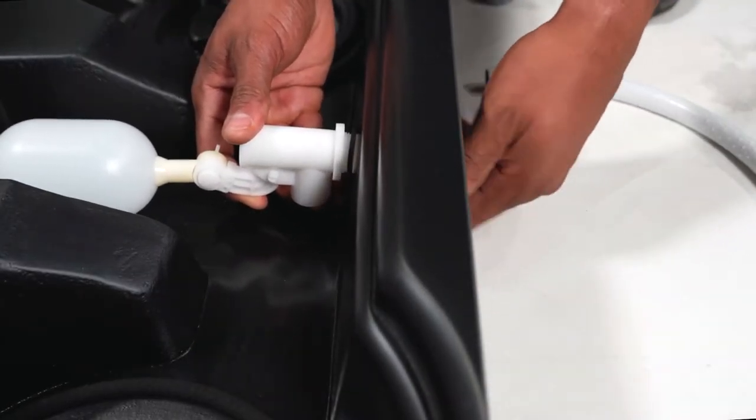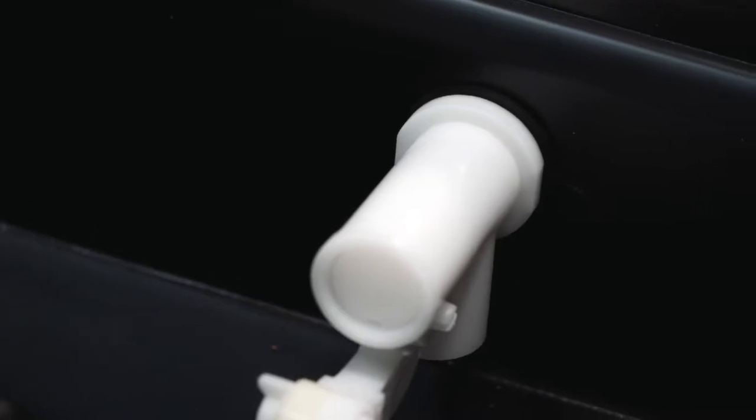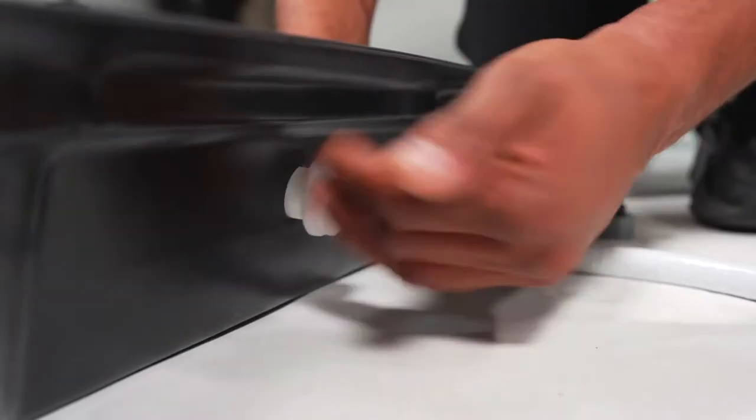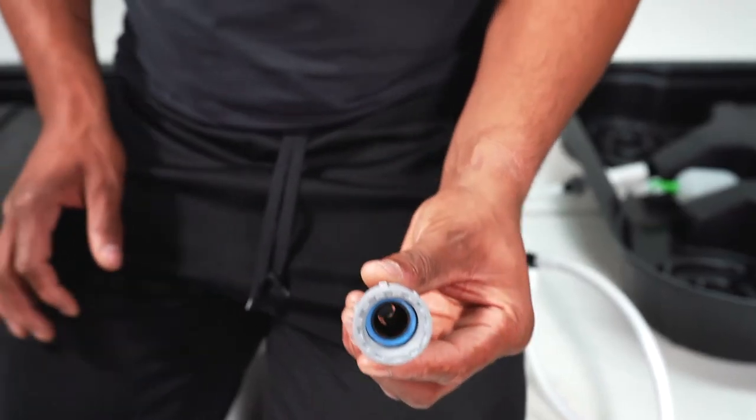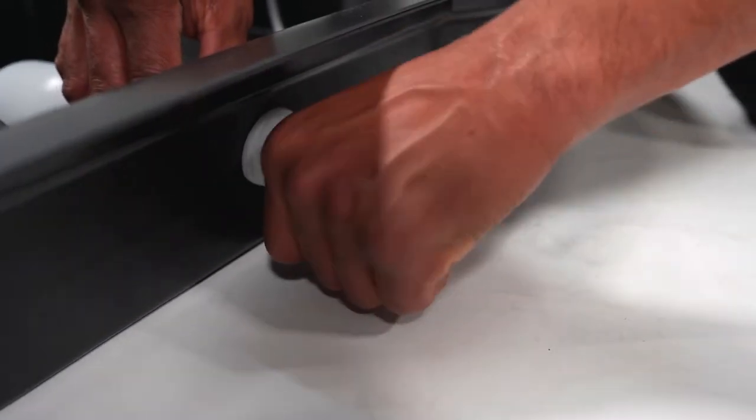To begin, insert the Megavalve into your Megapot tray, ensuring the rubber washer is on the inside of the pot. Then, hand tighten the nut as seen here. Ensure the O-ring is still in place on the hose tail and thread it onto the Megavalve.